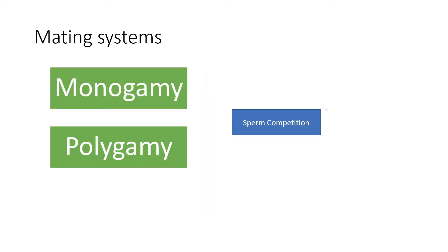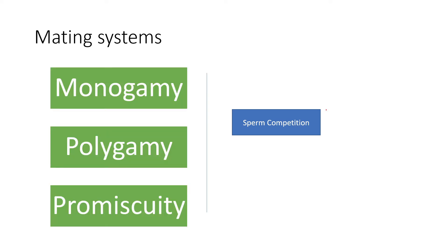Mating systems include monogamy, polygamy, and promiscuity — these are particular mating systems associated with different organisms. Monogamy is a one-to-one mating system where one female and one male mate for life with no exchange of multiple individuals. Polygamy is one-to-many, where one particular individual can mate with multiple individuals. Promiscuity is essentially open mating — many can mate with many, so there is no fixed situation.